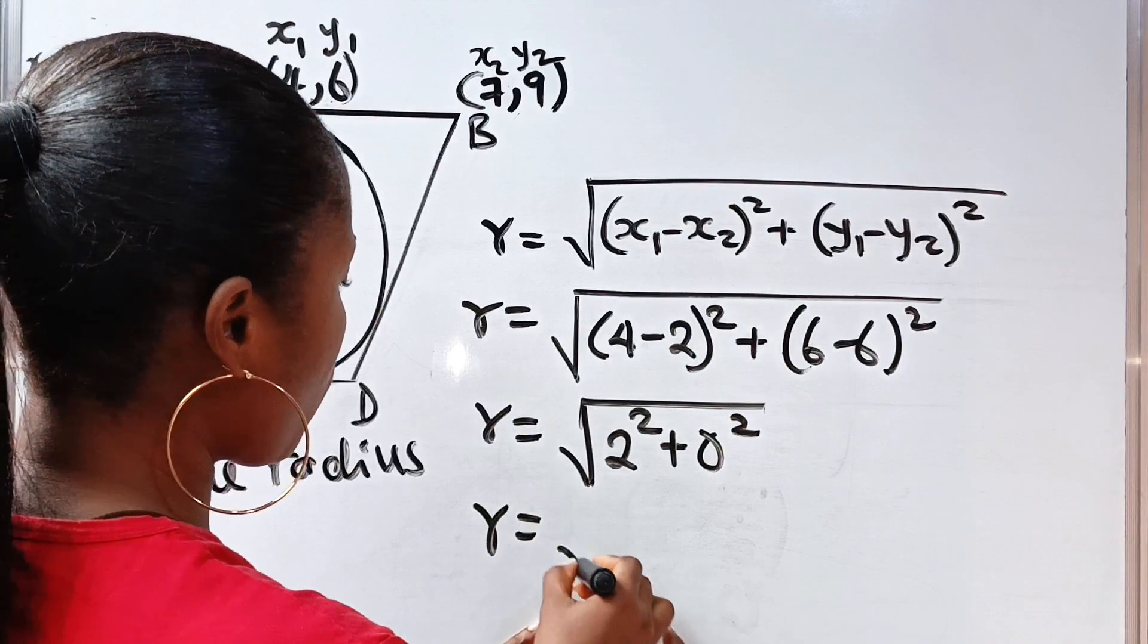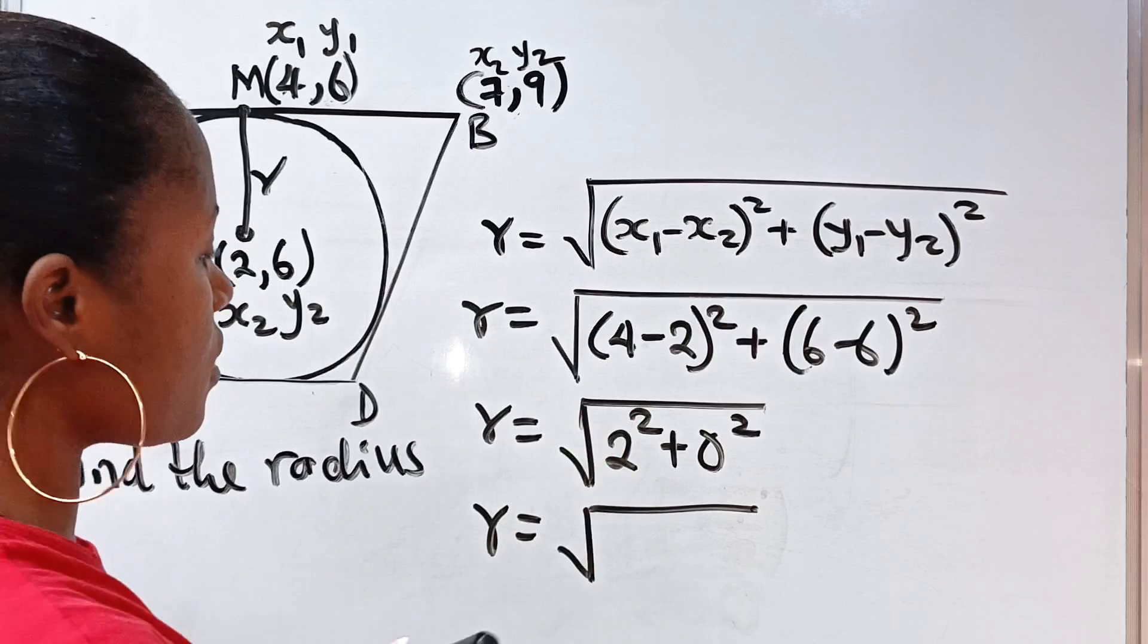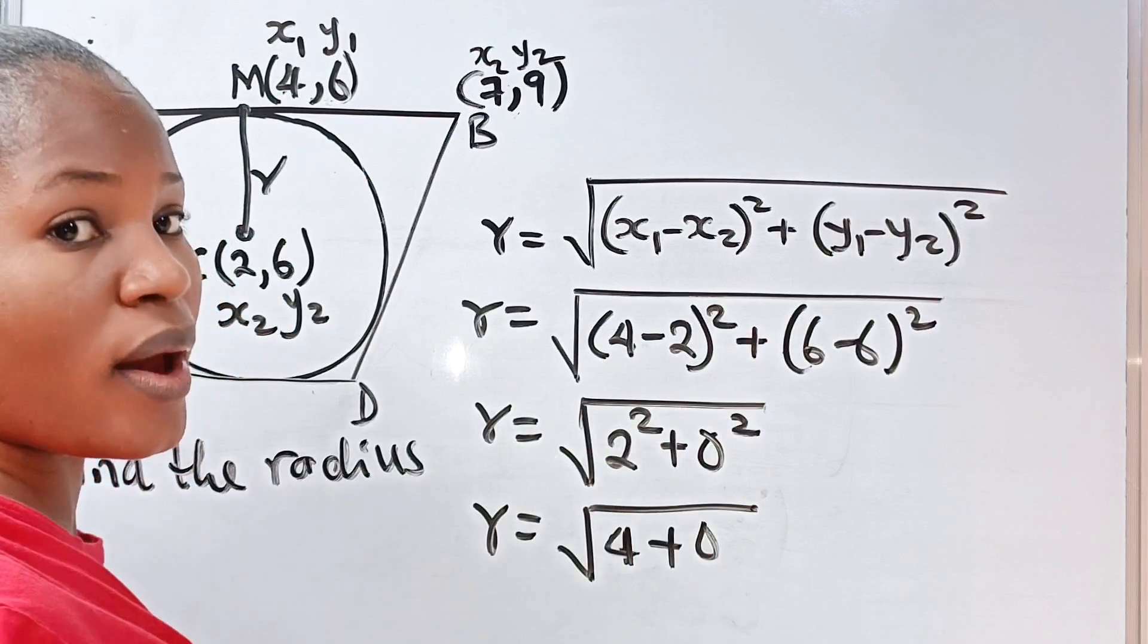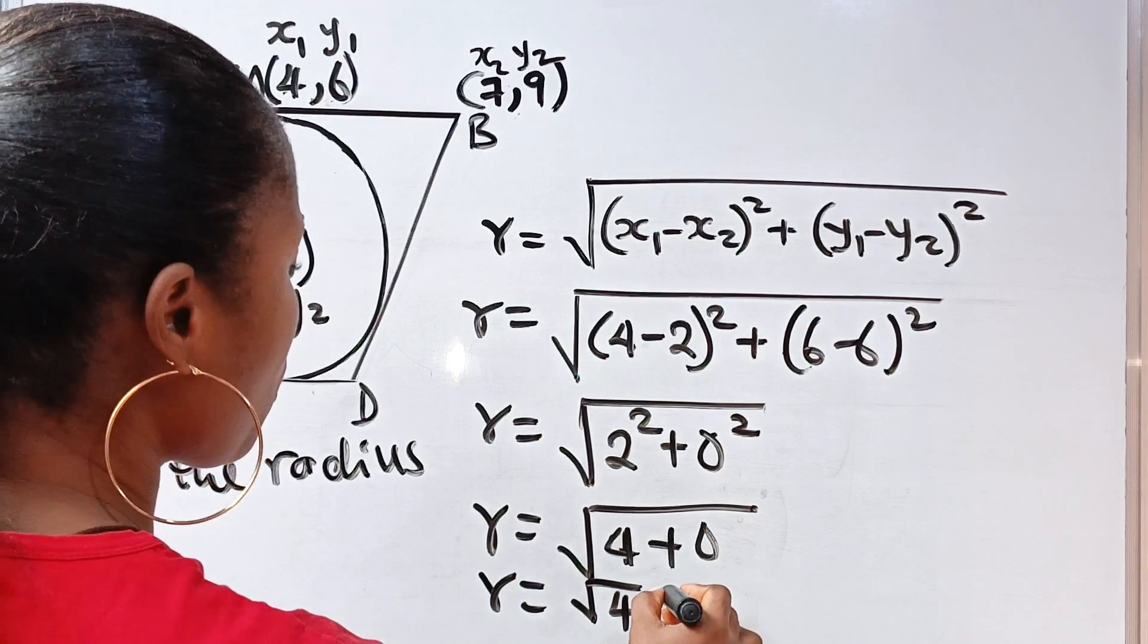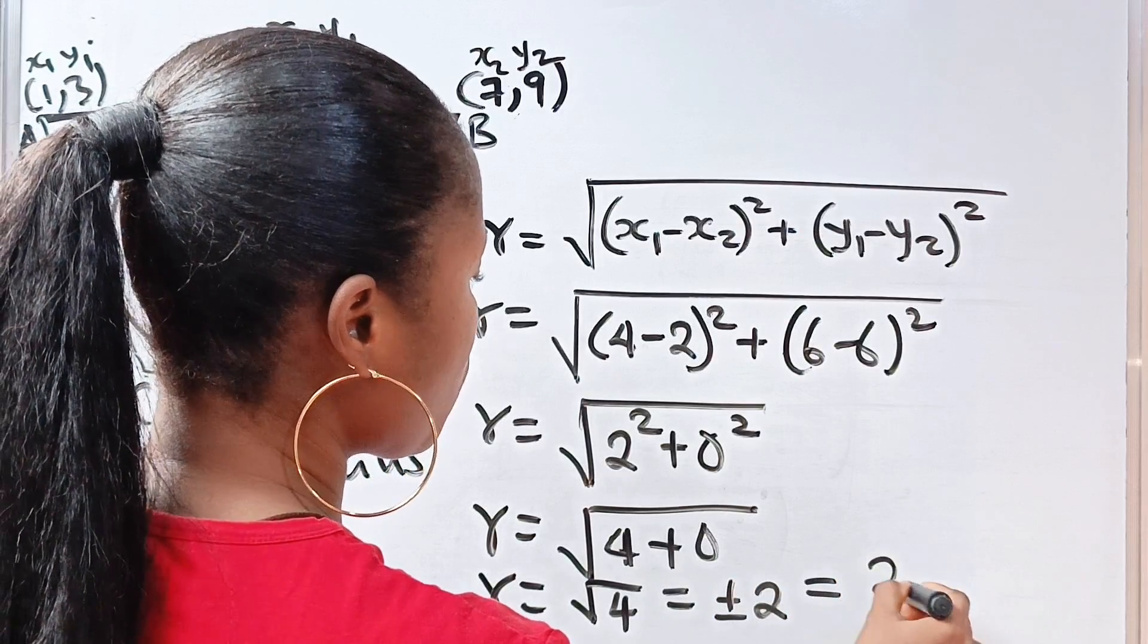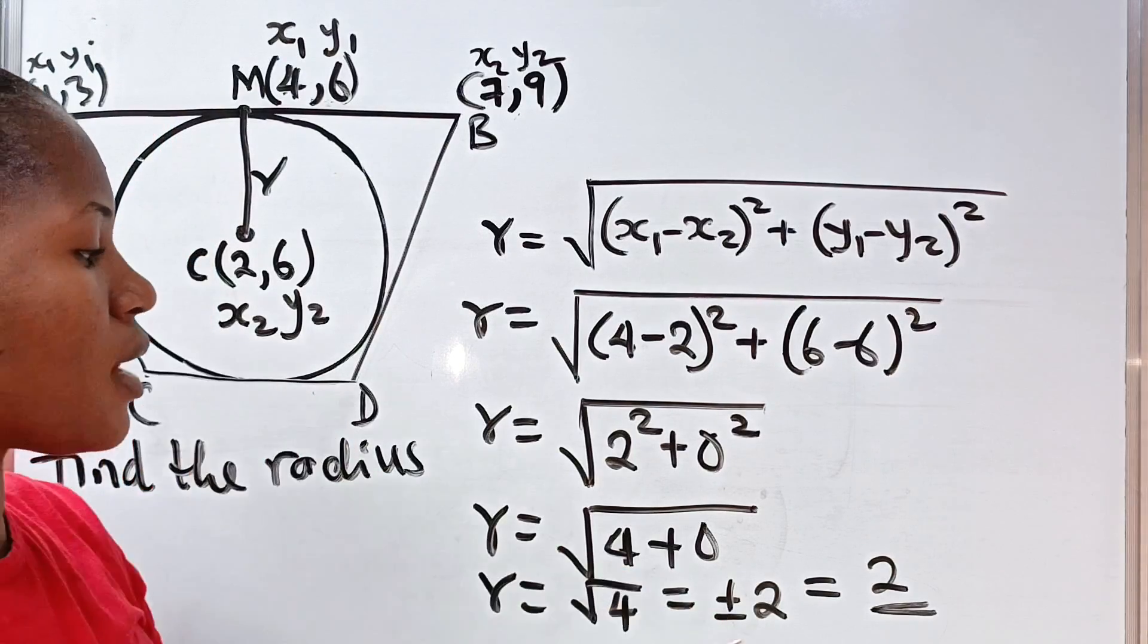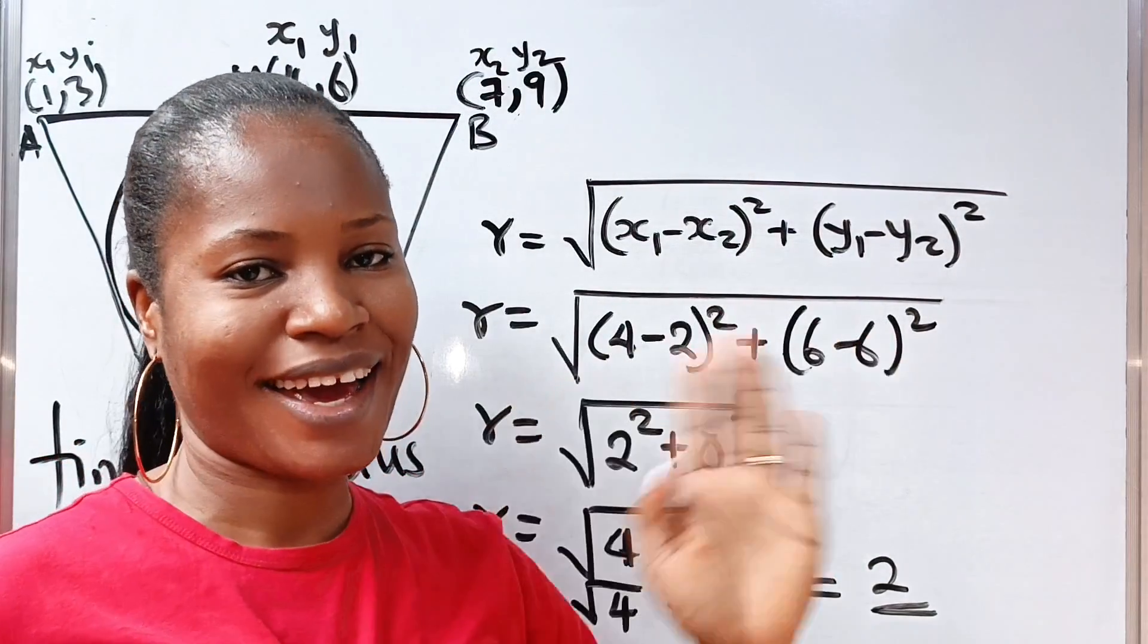So, R will be equal to the square root of 2 squared is 4, so we have 4 plus 0 because 0 squared is still 0. Therefore, R will be the square root of 4, which is equal to plus or minus 2. But, we are going to take plus 2, because we are talking about length and length cannot be negative. Thank you so much for watching. See you in my next video. Bye.